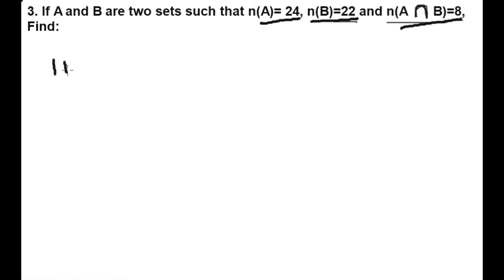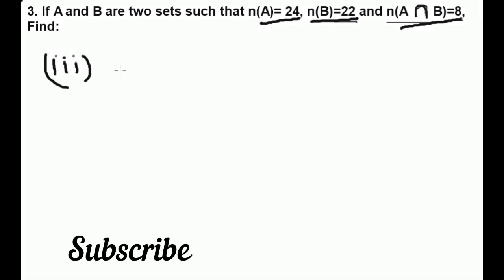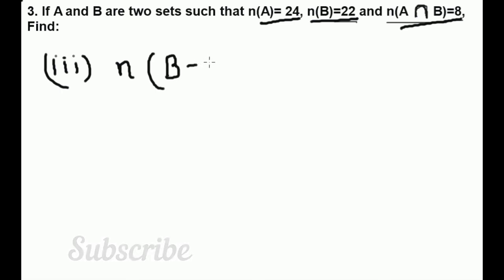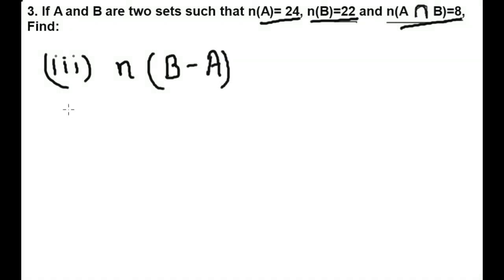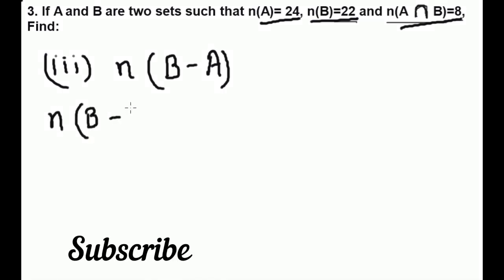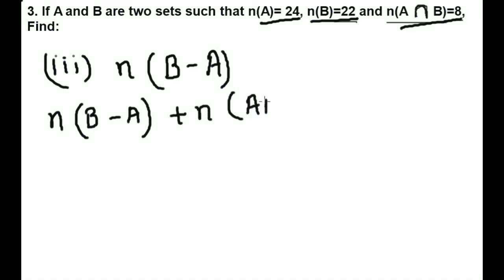Question number 3 is to find the number of elements of set B minus A. For this, the formula is: the number of elements of B minus A plus the number of elements of A intersection B is equal to the number of elements of B.